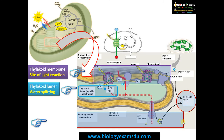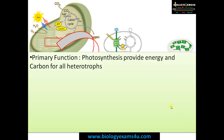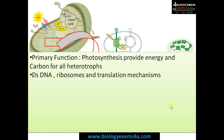The Calvin cycle, or dark reaction, or light-independent reaction, takes place in the stroma. The major function is photosynthesis, providing energy and carbon for all heterotrophs. Chloroplast is a semi-autonomous organelle with its own DNA, ribosomes, and translation mechanisms, coding for some proteins required for the chloroplast itself — that is why it is called semi-autonomous.